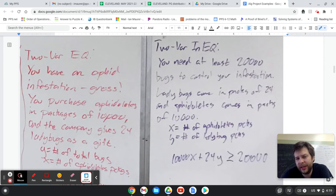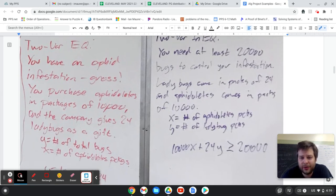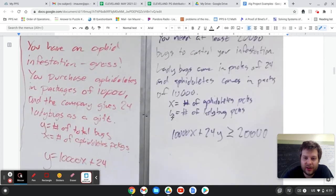And then similar sort of idea with the two variable inequality - you know that you need at least 20,000 total bugs to control your infestation. And you're purchasing packs of ladybugs, so 24 packs of ladybugs and 10,000 packs of aphidoletes. And so then here, because you need at least 20,000, that changes it to the greater than or equal to. And this is like a standard form inequality.